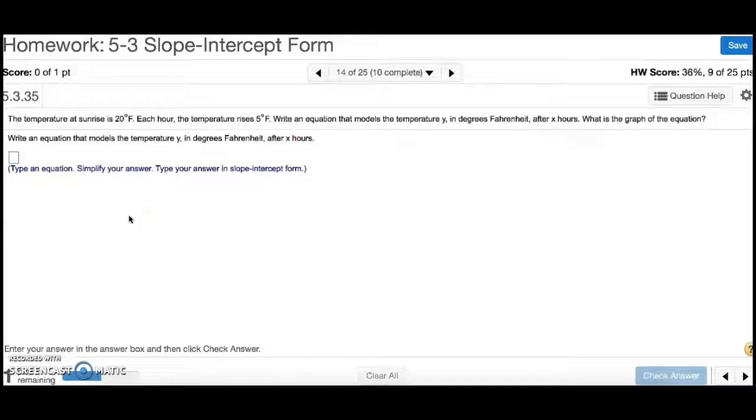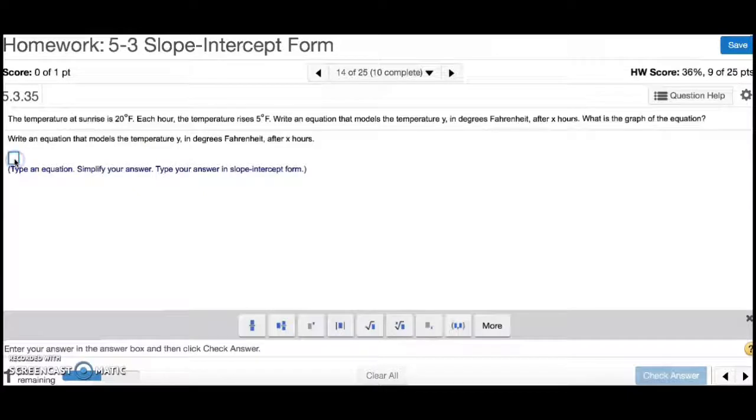Number 14. The temperature at sunrise is 20 degrees Fahrenheit. Each hour, the temperature rises 5 degrees. Write an equation that models the temperature y in degrees Fahrenheit after x hours. What is the graph of the equation? So, we have y equals. Our rate is 5. We're going up 5 degrees every hour. So, 5x. And we start at 20 degrees. So, we do plus 20. That's our starting point.